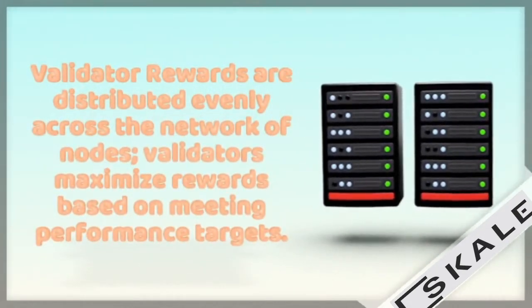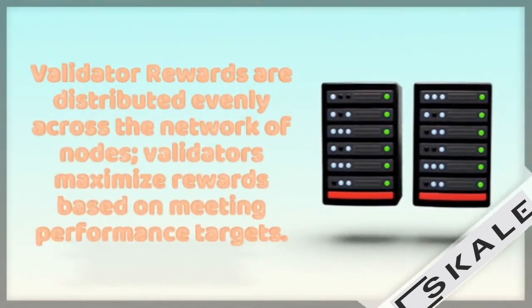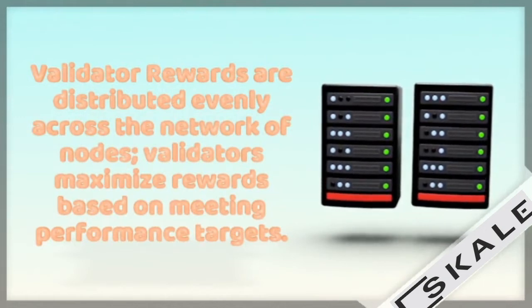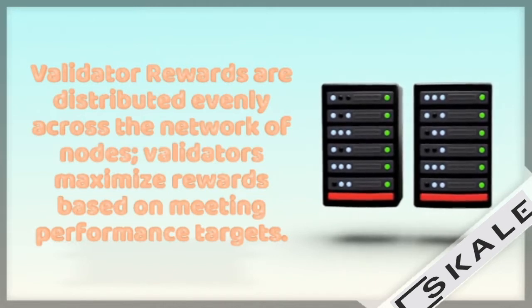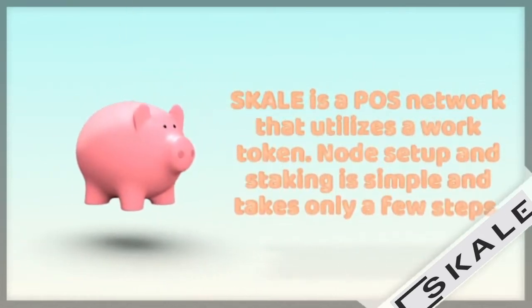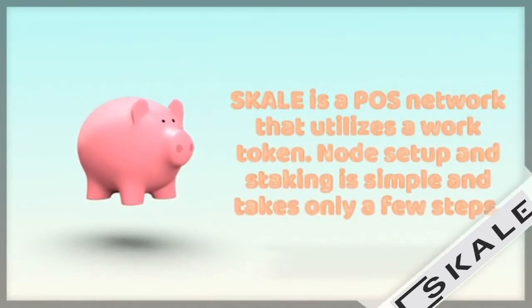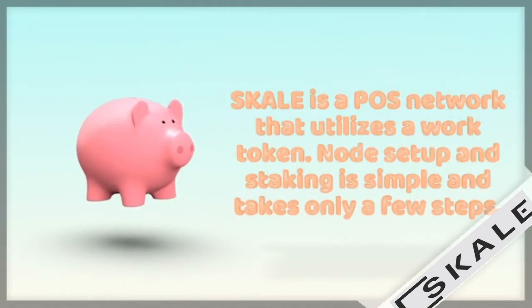The SCALE protocol optimizes allocation of resources of each node across the entire network of elastic blockchains. Validator rewards are distributed evenly across the network of nodes, and validators maximize rewards based on meeting performance targets. SCALE is a proof-of-stake network that utilizes a work token. Node setup and staking is simple and takes only a few steps.